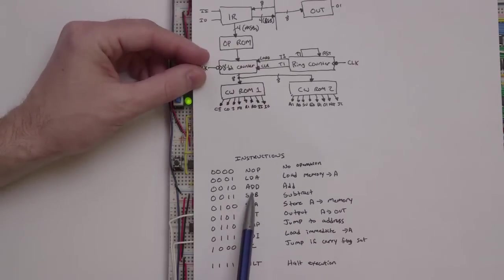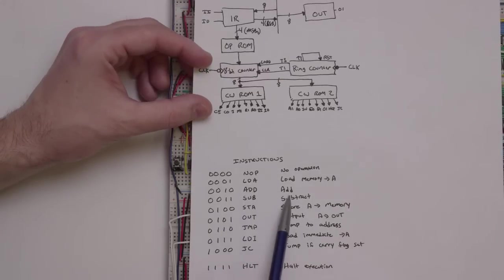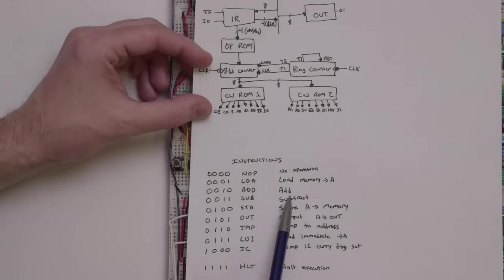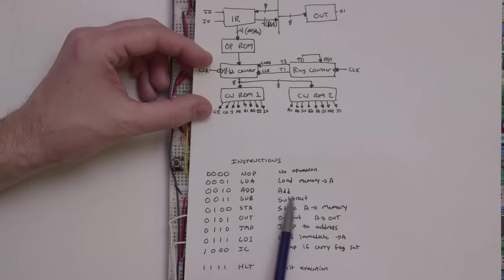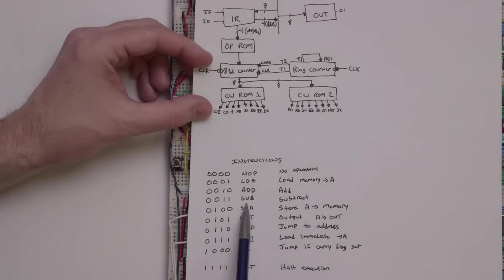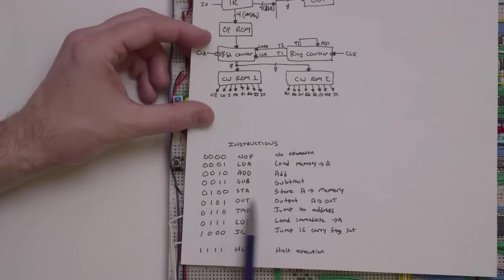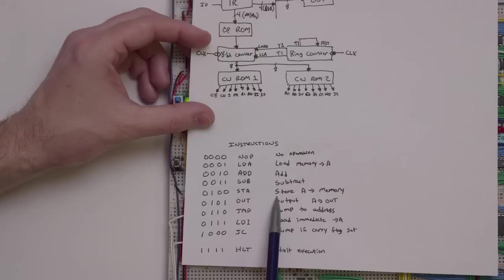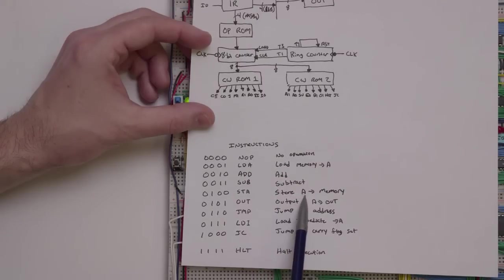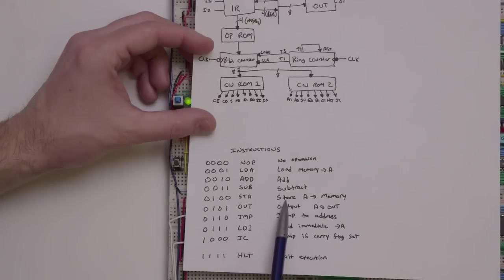The next instruction is Load A, which loads a value from memory into the A register. Then there's Add, which takes a number from memory and adds it to whatever's in the A register, putting the result back in the A register. Subtract is the same thing except it subtracts whatever is in memory from the A register and puts that result back in the A register. Store A takes data from the A register and puts it back in memory — so Load A and Store A are complements of each other.